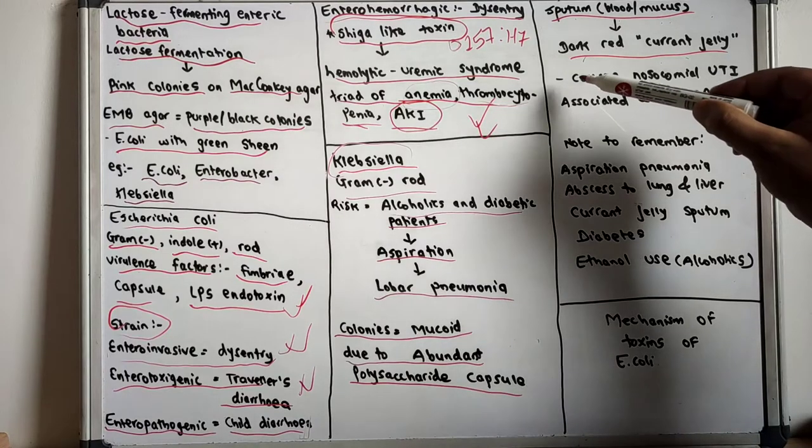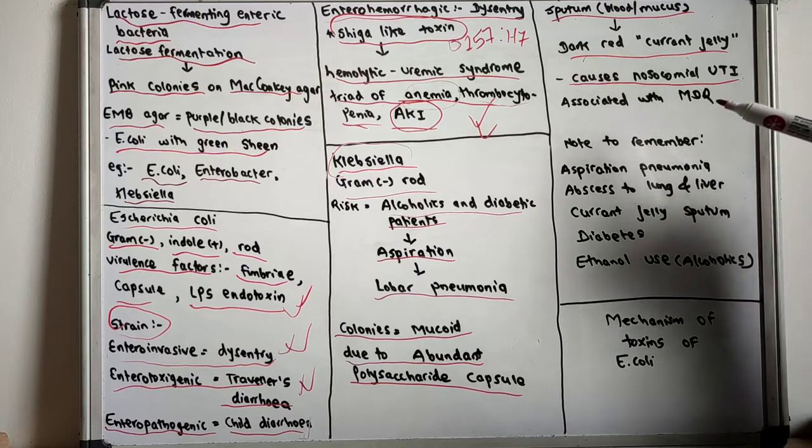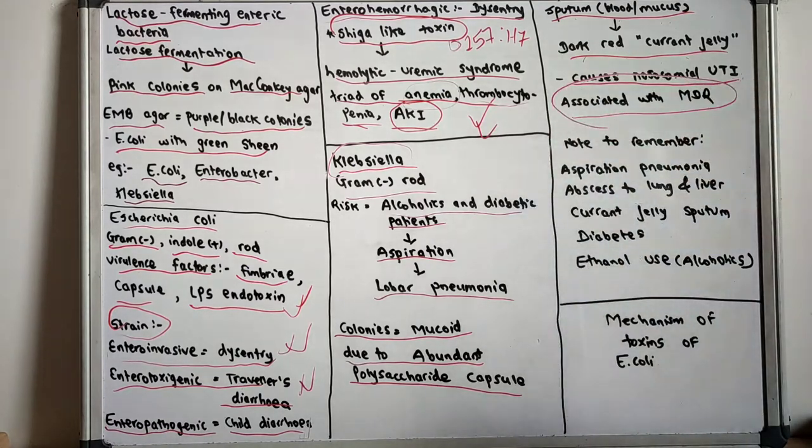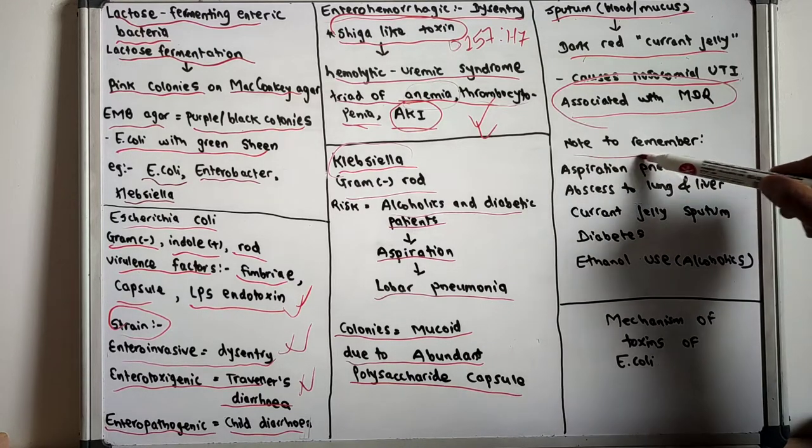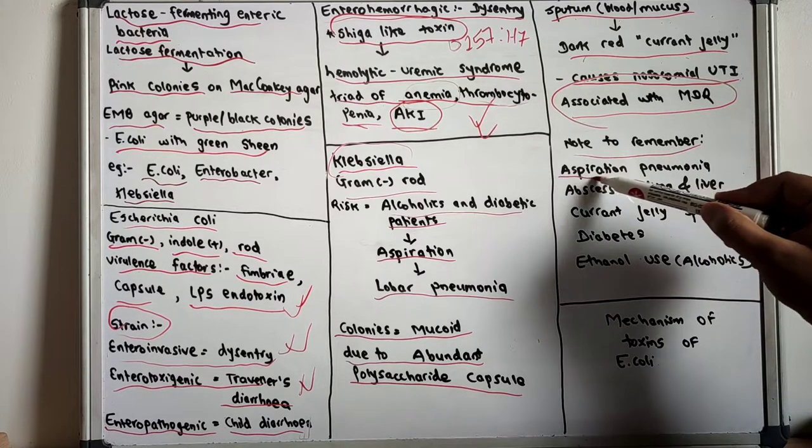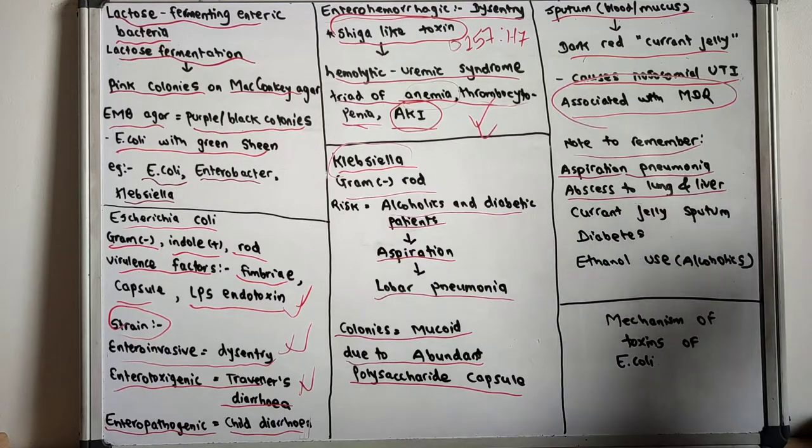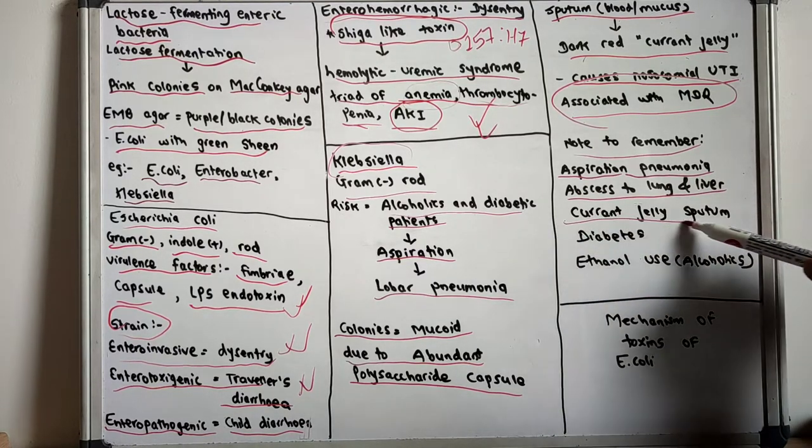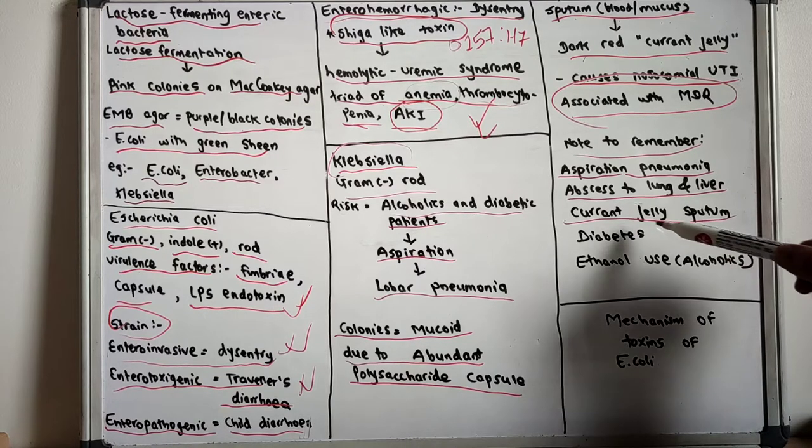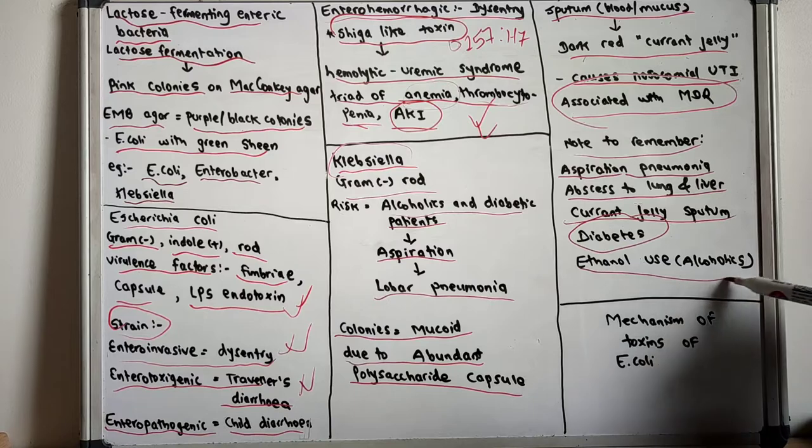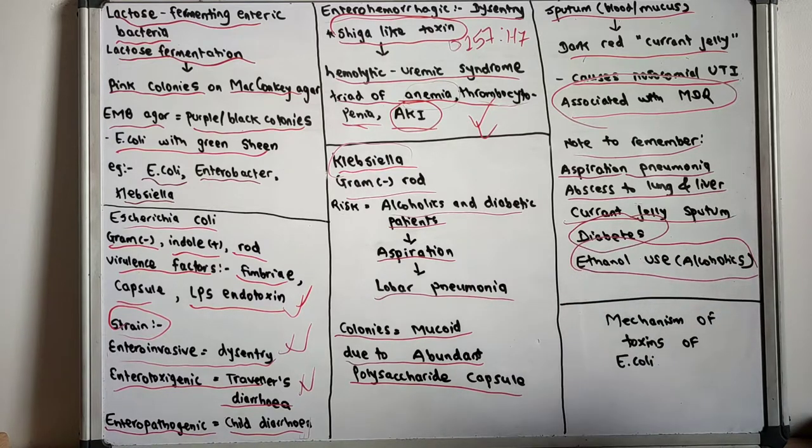Klebsiella is one of the main causes of nosocomial urinary tract infection, which is associated with multi-drug resistance. The note to remember is that it mainly occurs by aspiration and aspiration pneumonia can occur. There is abscess to the lung and liver. The currant jelly sputum is seen. It is mainly associated with diabetic patients and ethanol use, appearing in alcoholics.